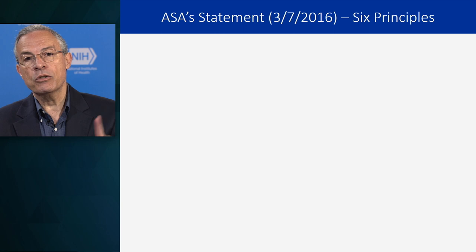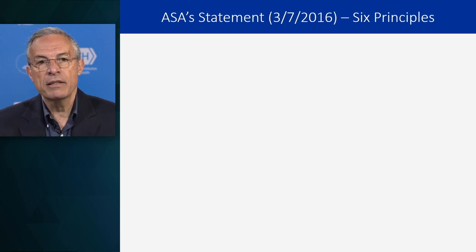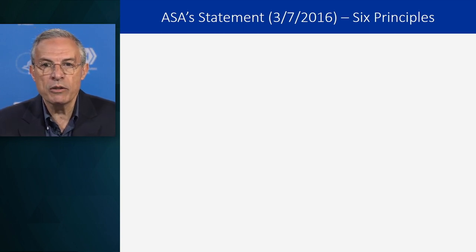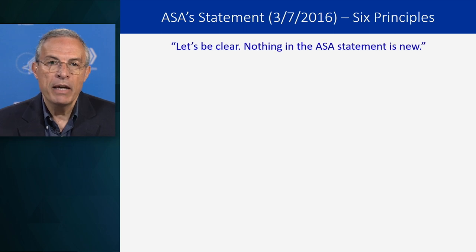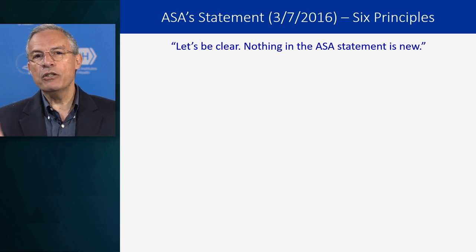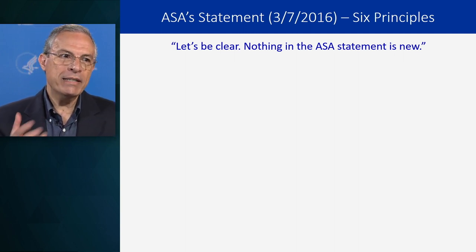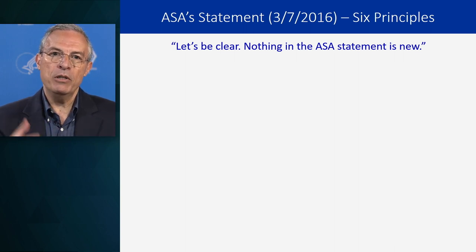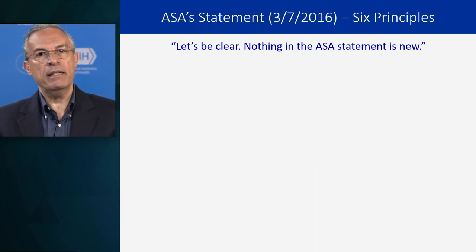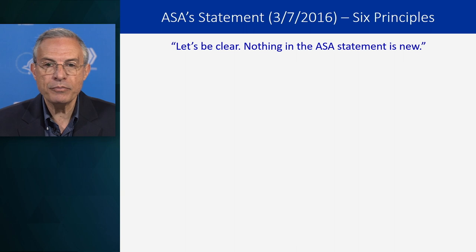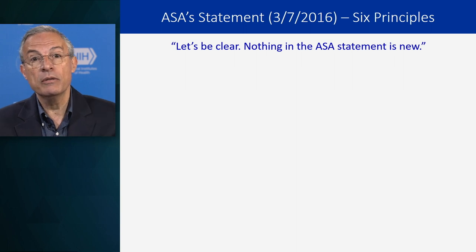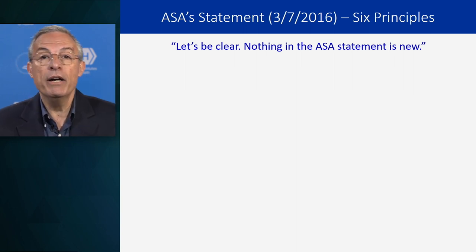Let's start with the 2016 statement. It gave six principles, and it started by saying: 'Nothing in the ASA statement is new.' This is an accumulation of decades of things that were misinterpreted and published with the wrong interpretation. The ASA said, once and for all, let's make things clear. Nothing new in that statement, but it was a push for the scientific community to be aware of all these things.